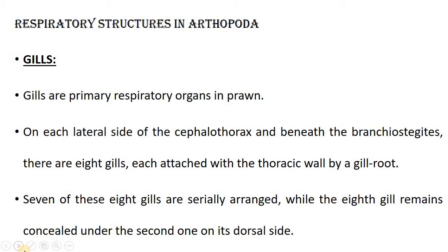In the case of Arthropoda, there are various types of respiratory organs: particularly the gills, the trachea, the book lungs, and the book gills. So four types of respiratory structures will be discussed in this chapter.